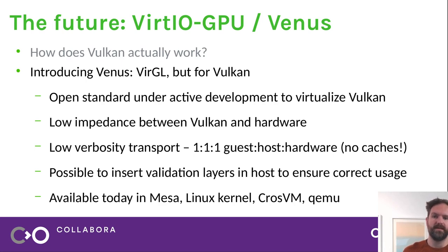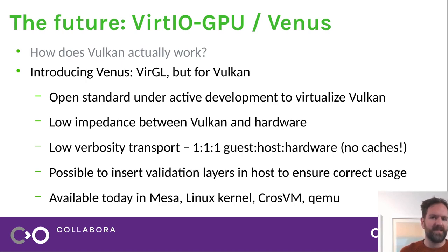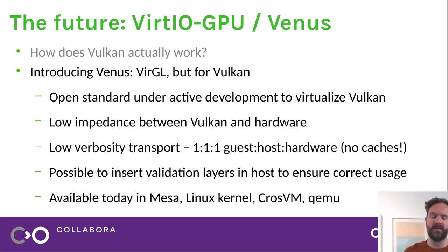Using Vulkan layers to ensure correct API usage with validation, we can put that inside the host, and the host can ensure that the guest's use of the Vulkan API is correct — just a bit of scepticism, another point where the host doesn't have to trust that the guest is doing the right thing. We have implementations of Venus available in Mesa, in the Linux kernel, in the crosvm hypervisor, and also I believe not yet merged, inside the QEMU hypervisor as well. Anyone is free to implement Venus — it's a completely royalty-free, vendor-neutral standard.